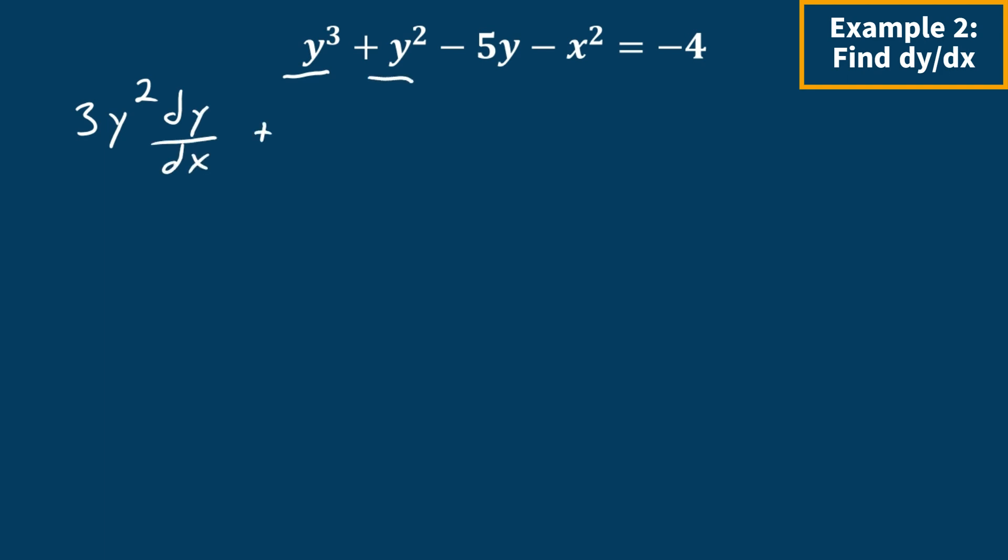Looking at the second term, it's going to give us 2y dy dx. The third term is going to be negative 5 dy dx. This term here is x squared, which agrees with our other variable, so we can just simply take the derivative of that. And then the derivative of a constant is 0.